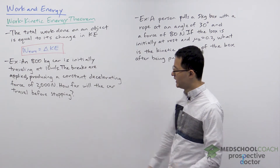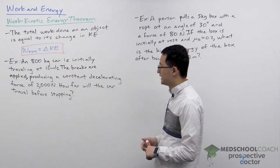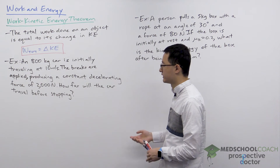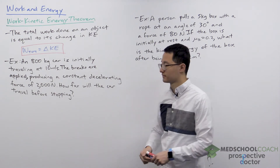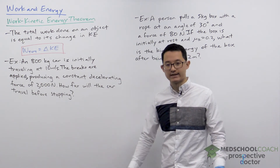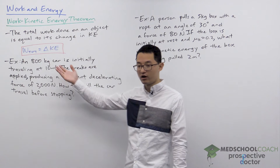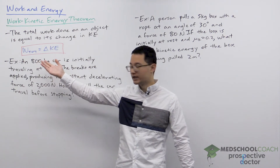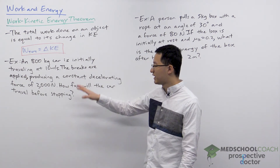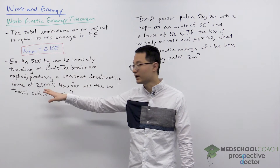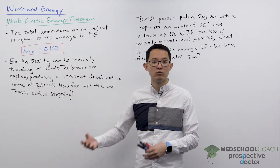In our first example, an 800 kilogram car is initially traveling at 10 meters per second. The brakes are applied, producing a constant decelerating force of 2,000 newtons. How far will the car travel before stopping? We can recognize this as a work-kinetic energy theorem problem because the car initially has kinetic energy and is slowing down to a stop — so there's a change in kinetic energy — and a force is acting over a distance, doing work.